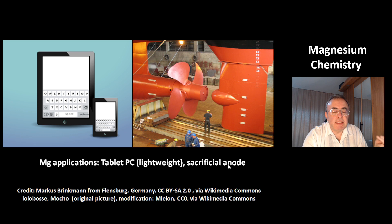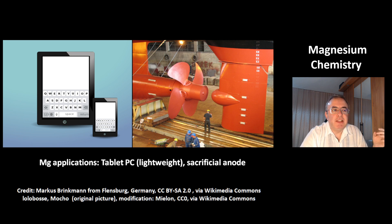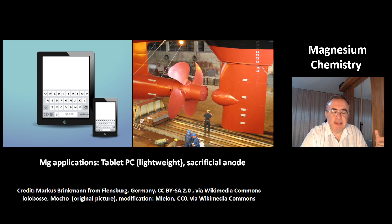Magnesium is used as a sacrificial anode on ships. The idea is to protect the body of the ship — the anode is oxidized and has to be replaced from time to time, but it's an efficient way to protect the ship's hull.